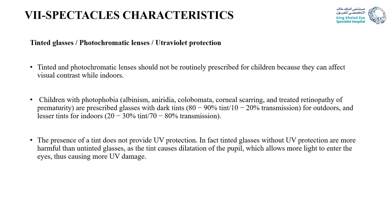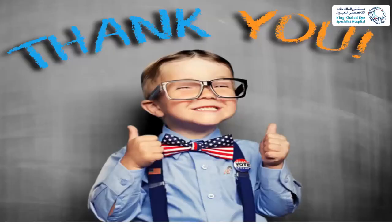Tinted and photochromatic glasses are not routinely prescribed for children as they affect visual contrast indoors. Children with photophobia — such as those with albinism, aniridia, coloboma, or corneal scar — are prescribed glasses with dark tint of about 80% to 90% for outdoor use and less tint of 20% to 30% for indoor use. Tinted glass without UVA protection is more harmful than untinted glass, because the tint causes pupil dilation allowing more light to enter the eye, and without UVA protection this causes more UVA damage. Thank you very much.